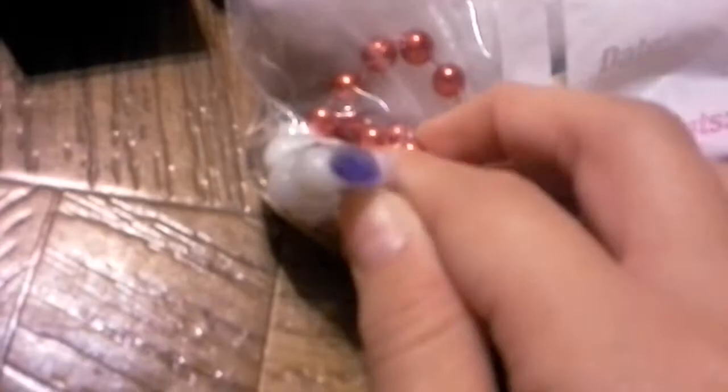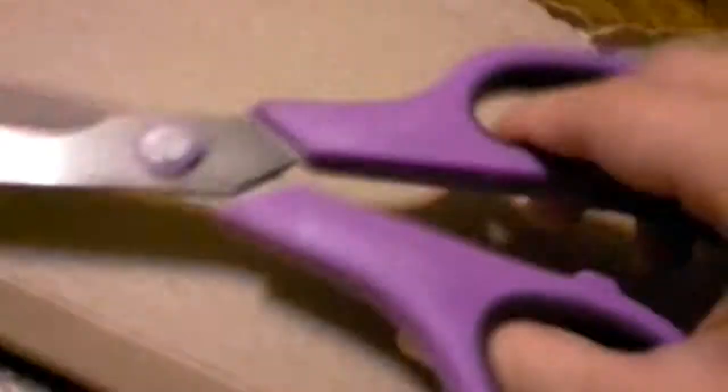Some paper board. And you'll also be needing some different colored beads. Let's get started. You don't have to say my name, Jonathan. First, start by cutting a square out of your paper board.